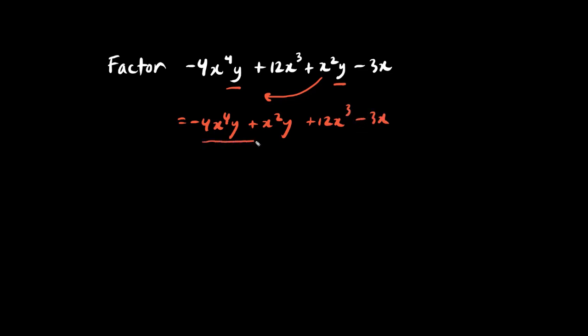And let's focus on the GCF of the first term. We can pull out an x squared y. This times negative 4x squared becomes the first term. And this times positive 1 becomes the second term.